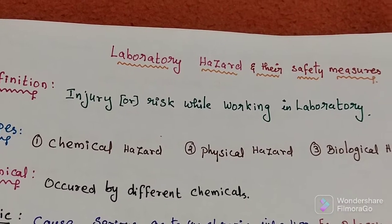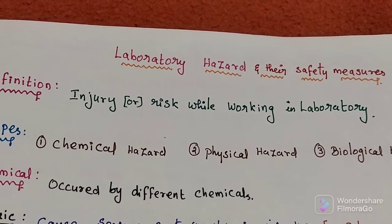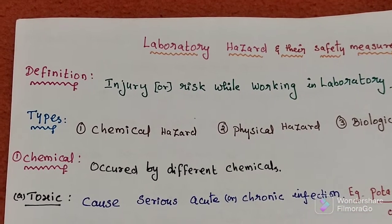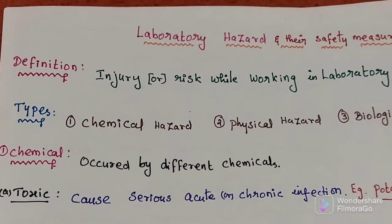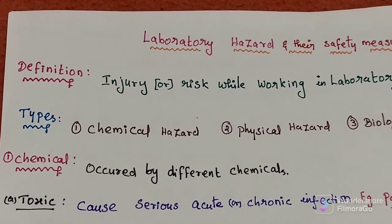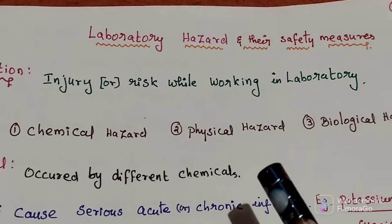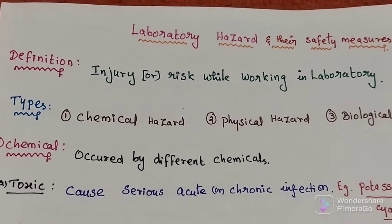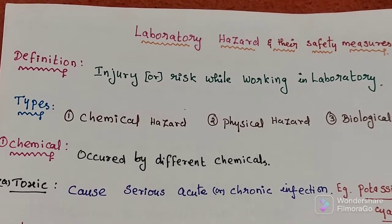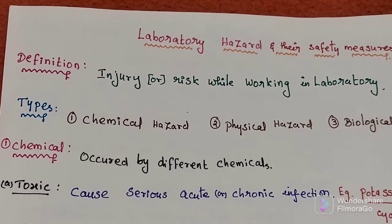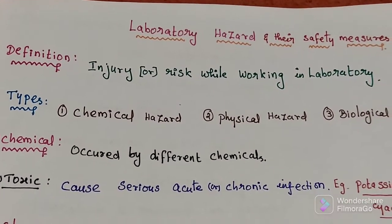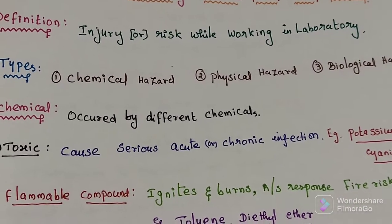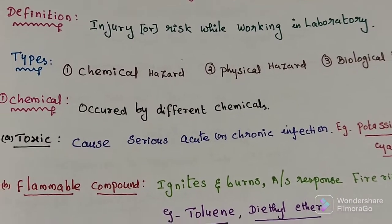It causes injuries or harm to our body. There are three types of hazards: chemical hazard, physical hazard, and biological hazard. Hazards acquired by different chemicals are called chemical hazards. Let's discuss each type one by one.